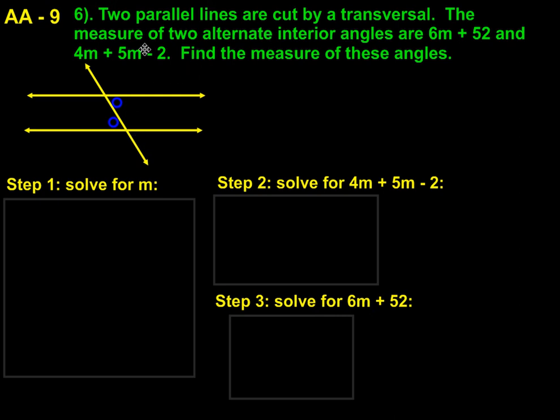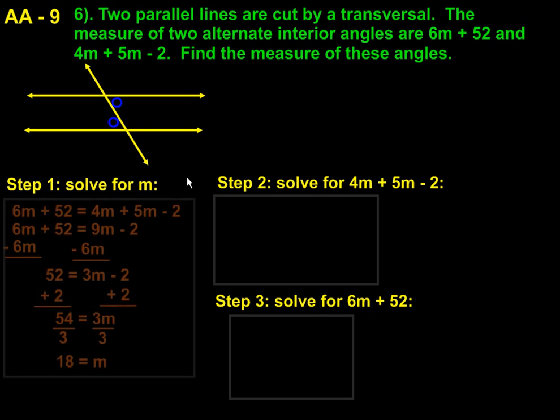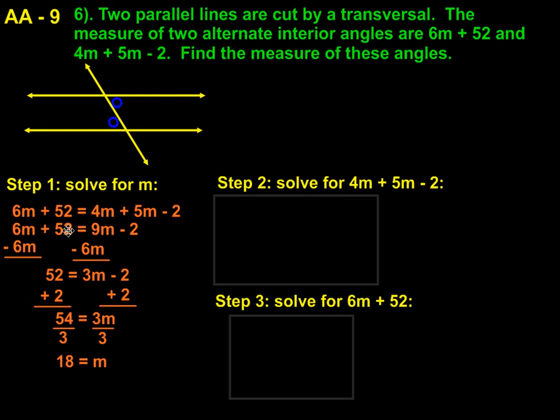So the first thing we need to do is solve for m by setting both of these equations equal to each other. And then we combine like terms. So we get 6m plus 52 equals 9m combining the 4 and the 5 minus 2. Then we subtract 6m from both sides.